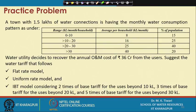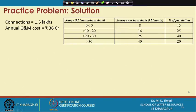The tariff models to be designed are: a flat rate model, a uniform rate model, and an increasing block tariff (IBT) with a 4-block system. For the IBT, the base tariff doubles beyond 10 kL, triples beyond 20 kL, and is 5 times the base beyond 30 kL. Let us see how each can be done.